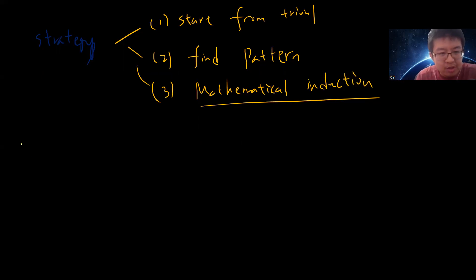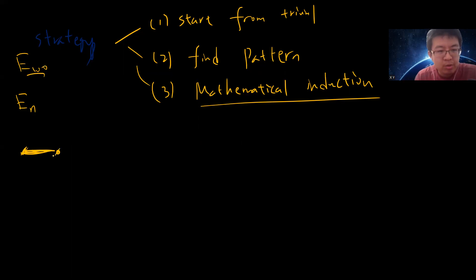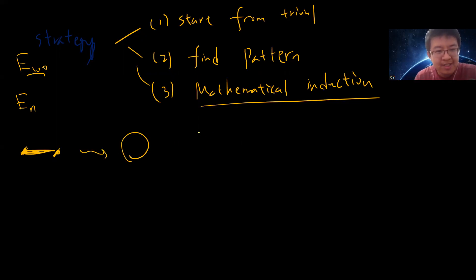Let's solve the simple case. Suppose you only have one noodle. Let E_n be the expected number of circles formed with n noodles. Our goal is to find E_100. If you have one noodle and randomly choose two ends, you only have one choice — it will become a circle — so E_1 equals 1.